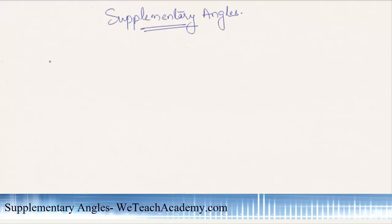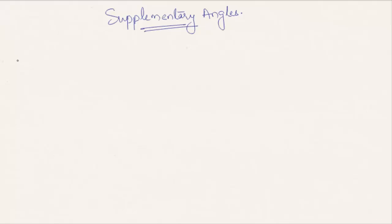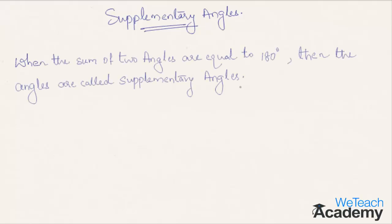Welcome to vteachacademy.com. In this presentation we are going to discuss supplementary angles. When the sum of two angles is equal to 180 degrees, then the pair of angles are called supplementary angles.